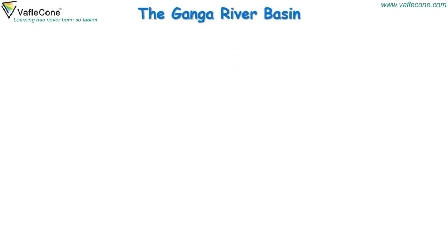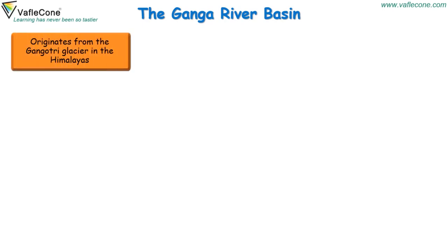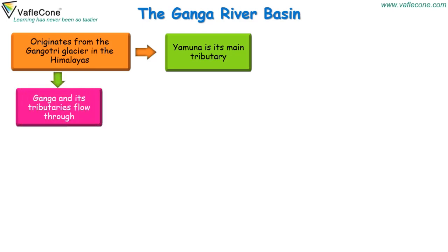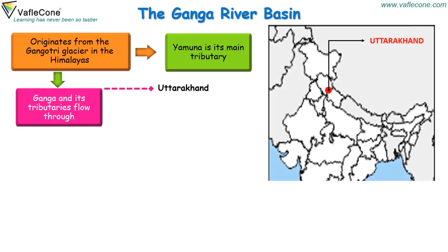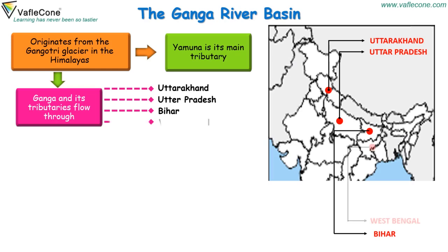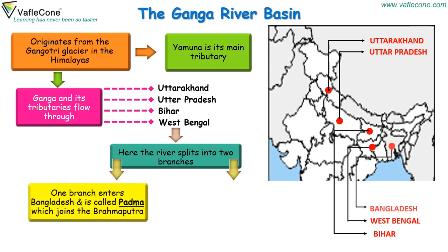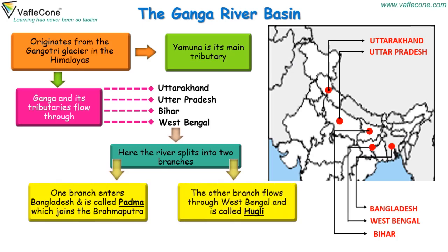The Ganga River Basin: Ganga River originates from the Gangotri Glacier in the Himalayas. Yamuna is its main tributary. Ganga and its tributaries flow through Uttarakhand, Uttar Pradesh, Bihar, and West Bengal. From West Bengal, the river splits into two branches. One branch enters Bangladesh and is called Padma, which joins the Brahmaputra. The other branch flows through West Bengal and is called Hooghly.